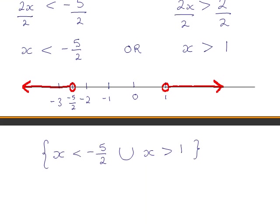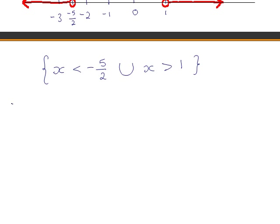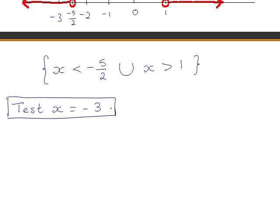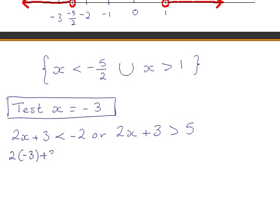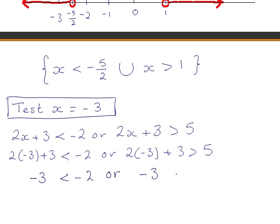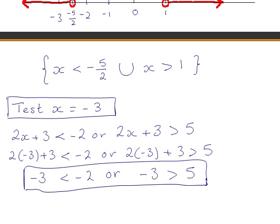So we'll just check that we are correct. We'll test x = −3. This is part of our solution set, so it should work out to make at least one of the inequality statements true. At least one of these must be true in order to satisfy our inequality statement.